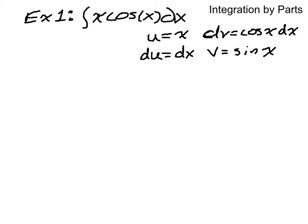And then for integration by parts, I'm doing uv minus the integral of v du, so that's going to be x sine of x minus the integral of sine of x dx.